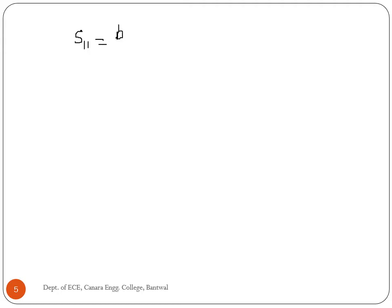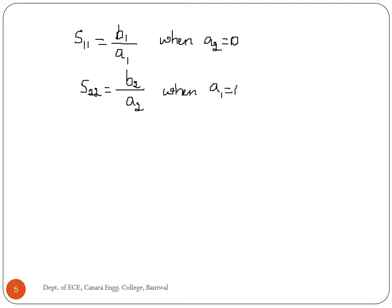The physical significance of S-parameters can be described as follows. S11 = B1/A1 when A2 = 0, meaning port 2 is matched terminated. S12 = B1/A2 when A1 = 0, meaning port 1 is matched terminated.